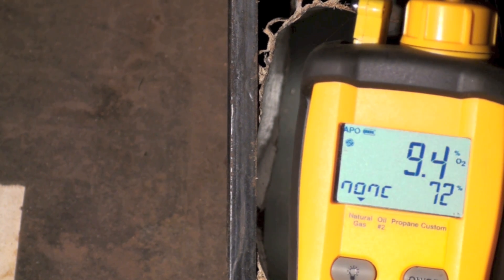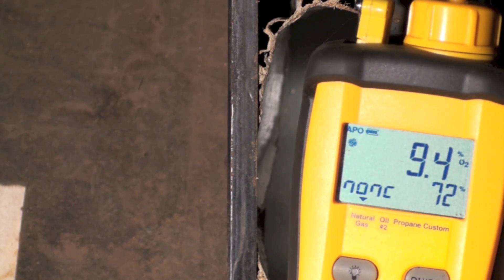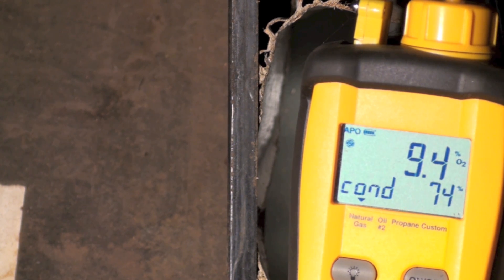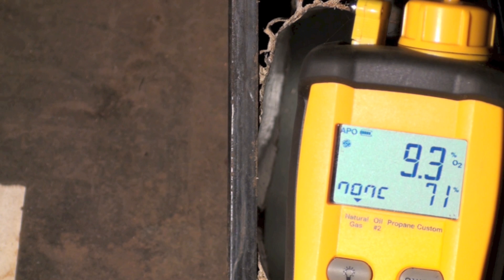Let's look at the O2 and CO2. CO2 is 6.4, O2 is 9.4. And non-condensing, now I'm showing 71. So even though I reduced the gas flow to the burners, I did not make this furnace more efficient. I actually probably made it a little less efficient.